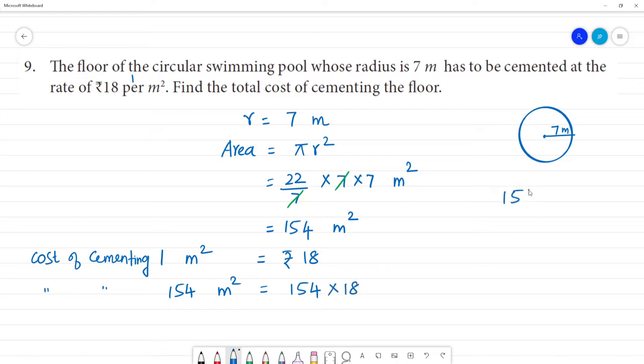154 multiplied by 18: 8 fours are 32 remainder 3, 8 fives are 40, 40 plus 3 is 43 remainder 4, 1 eight is 8. The total cost is rupees 2772.